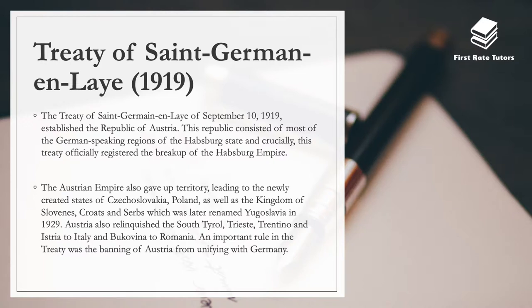The next treaty was the Treaty of Saint-Germain-en-Laye in 1919, which established the Republic of Austria. This republic consisted mostly of the German-speaking regions of the Habsburg state, and crucially the treaty registered the breakup of the Habsburg Empire. Austria gave up territory leading to the newly created states of Czechoslovakia, Poland, and the Kingdom of Slovenes, Croats and Serbs — later renamed Yugoslavia in 1929. Austria also relinquished South Tyrol, Trieste, Trentino and Istria to Italy, and Bukovina to Romania. Importantly, the treaty banned Austria from unifying with Germany or having any political union with Germany.